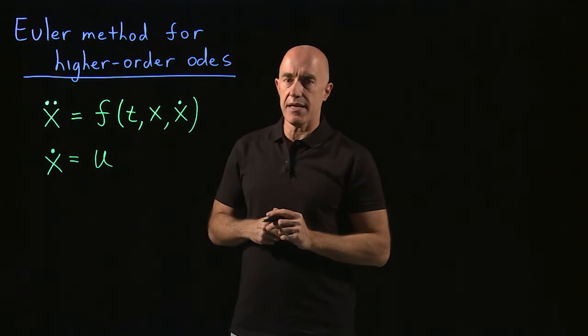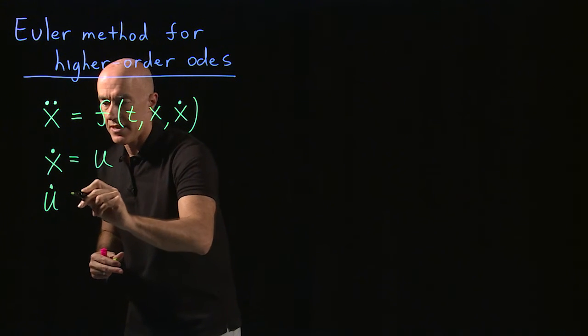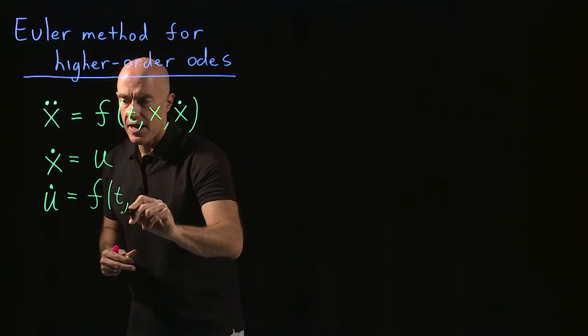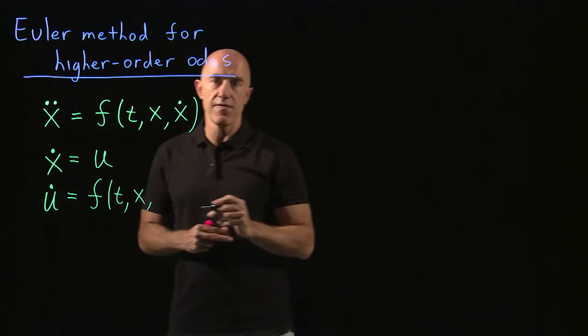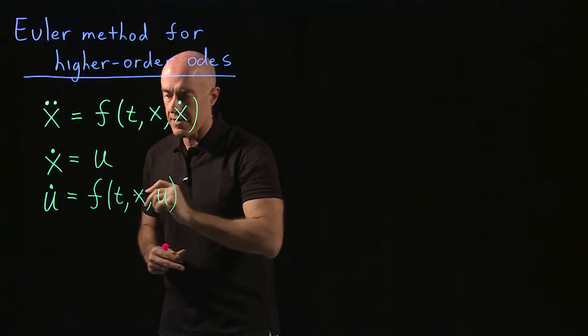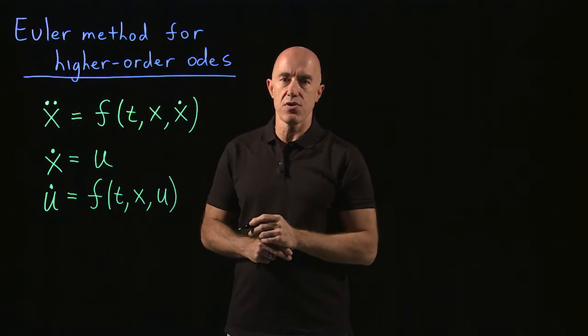And then x double dot is u dot. So x double dot then becomes u dot, and then that will be a function of time, a function of x, and a function of x dot. But here x dot is u. So we got our system of two first order equations.